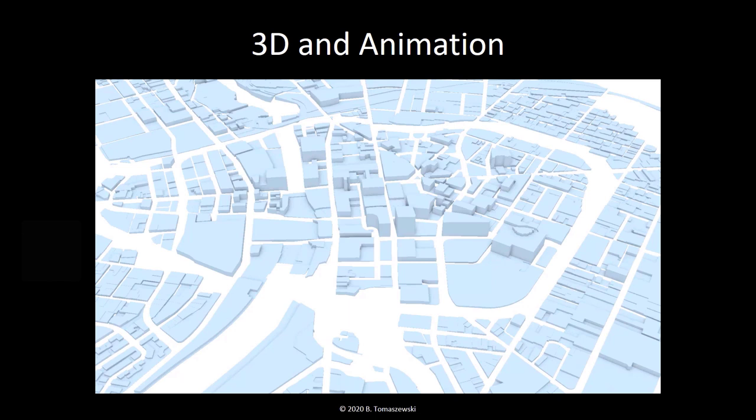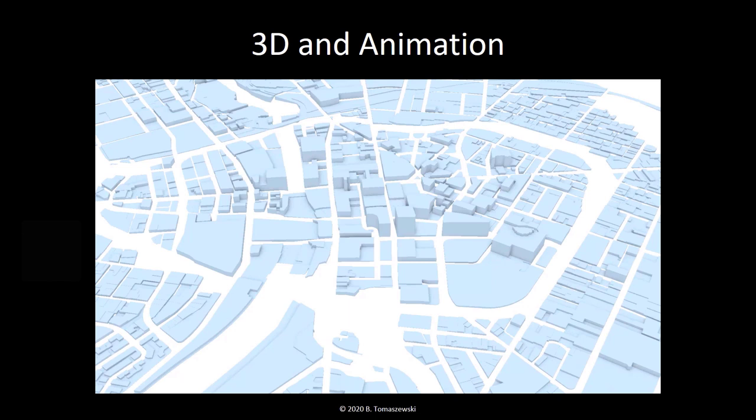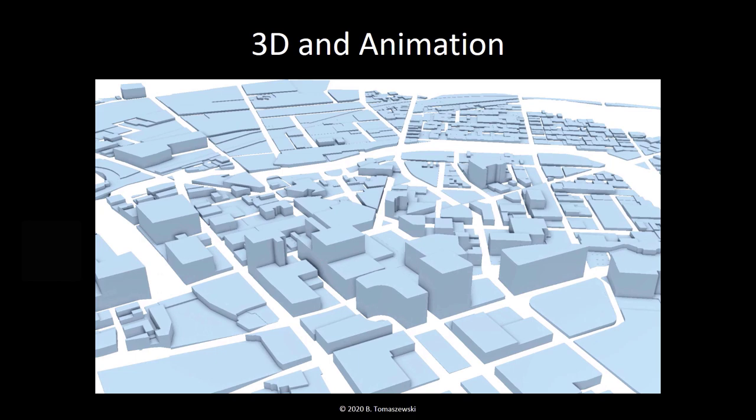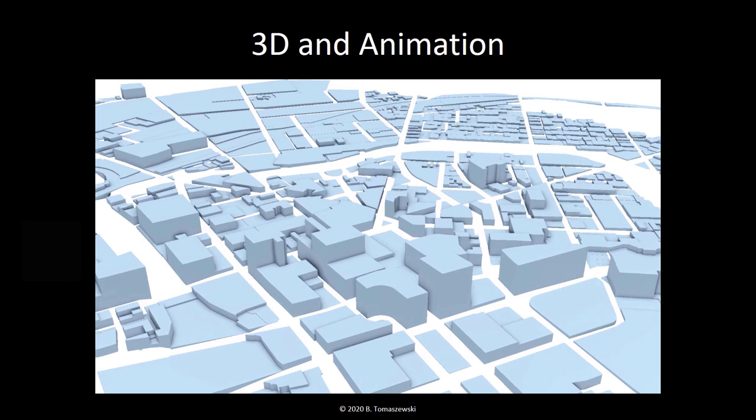Once reserved for very specialized software, three-dimensional representations of geographic information are now mainstream in GIS software. The combination of three-dimensional representations combined with animation techniques such as fly-throughs make for compelling visualizations that can realistically show geography in new and exciting ways.